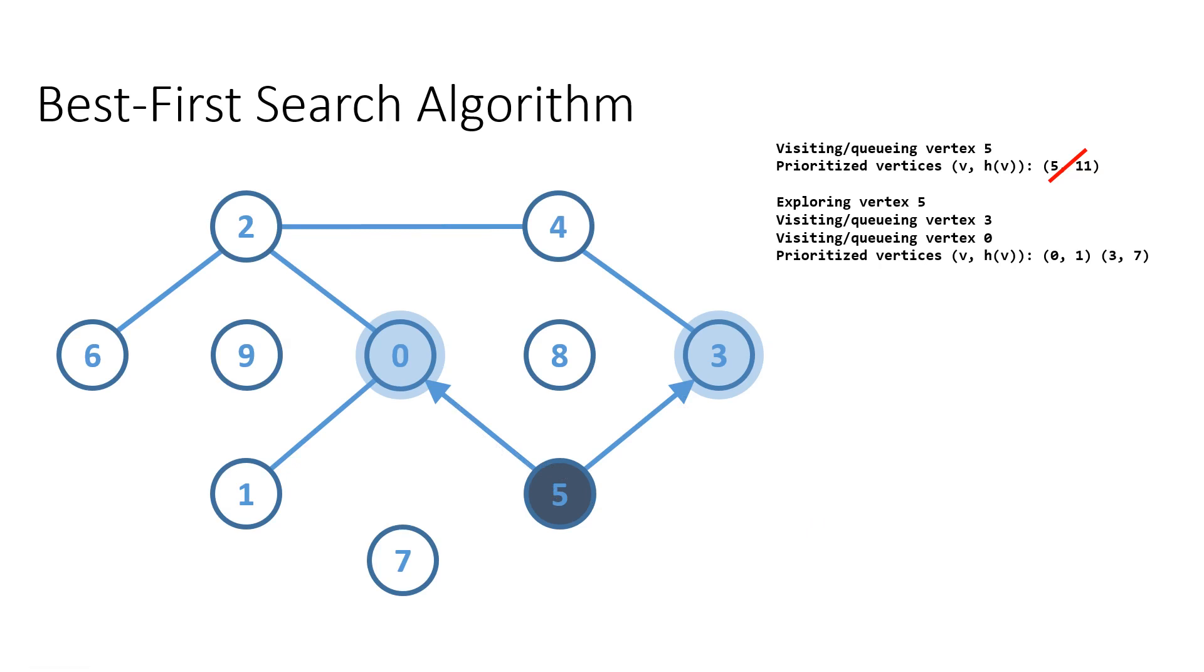If we manage to find the target element, we will backtrack to the starting vertex and reconstruct the search path.